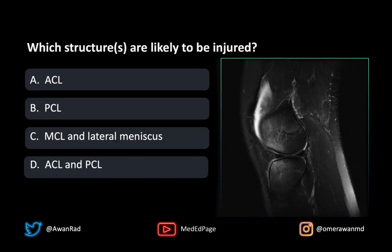If you notice on the image, there's bone marrow edema involving predominantly the anterior femoral condyle and the anterior tibial plateau. This should suggest a hyperextension injury mechanism.